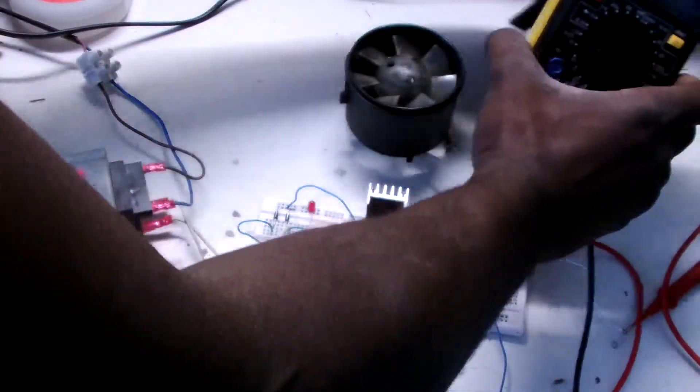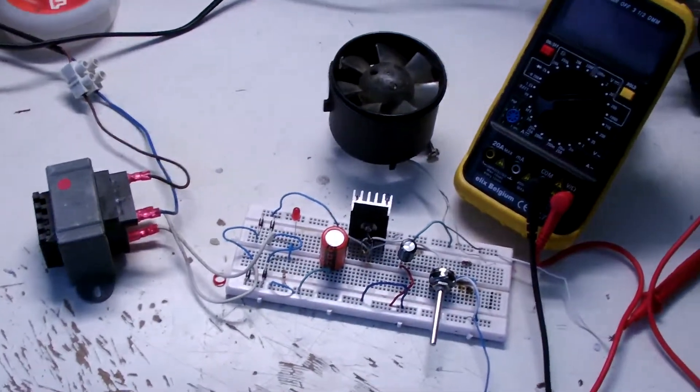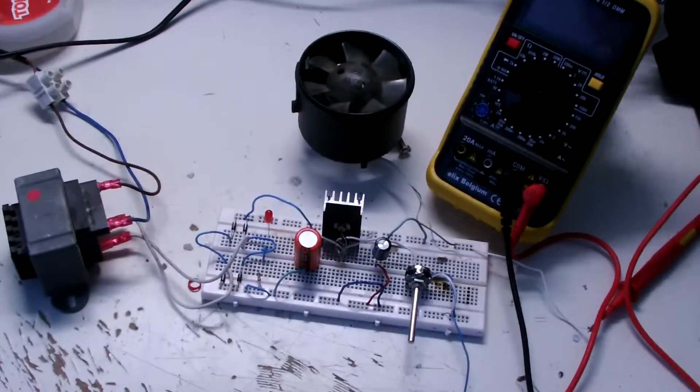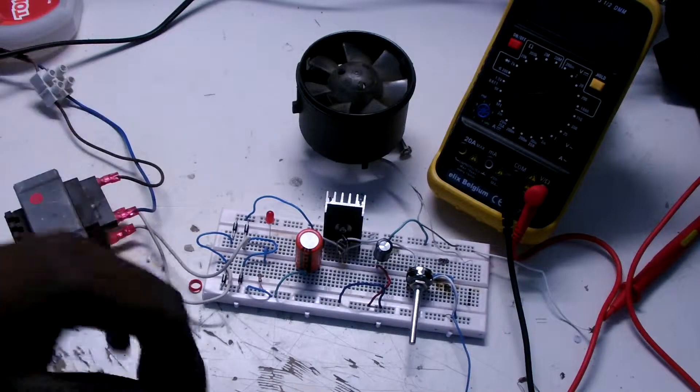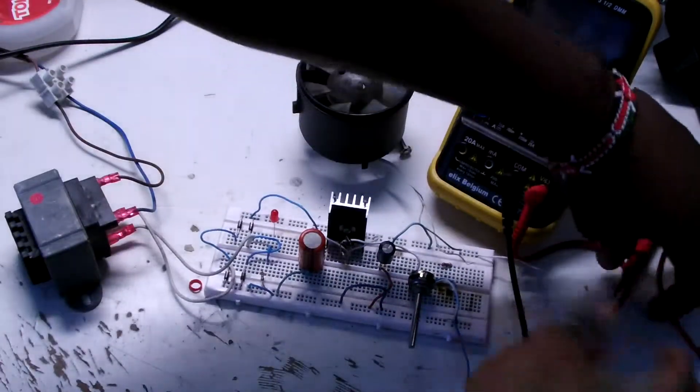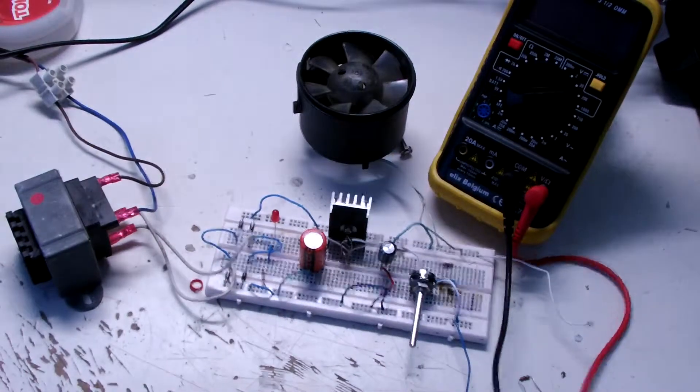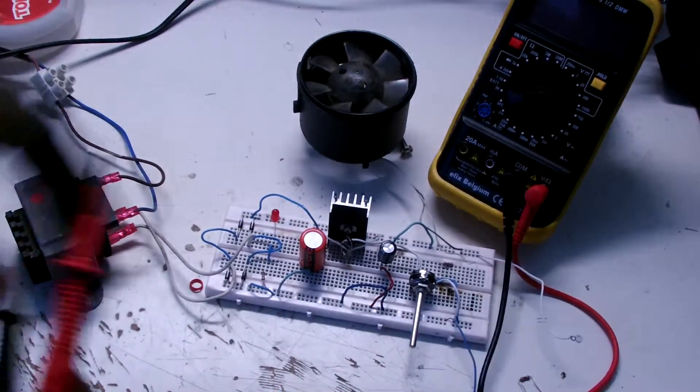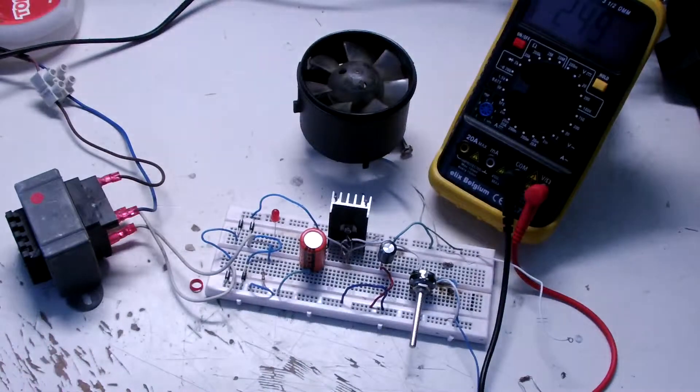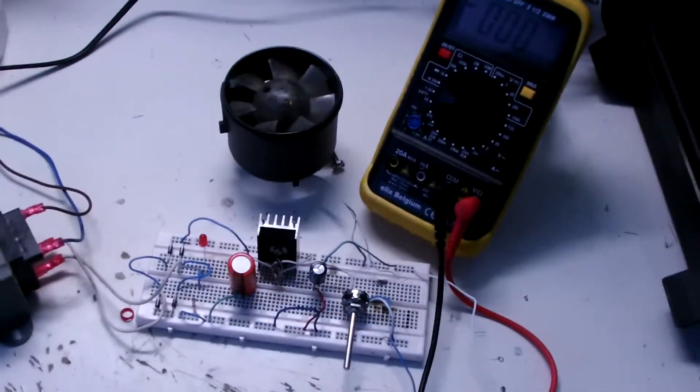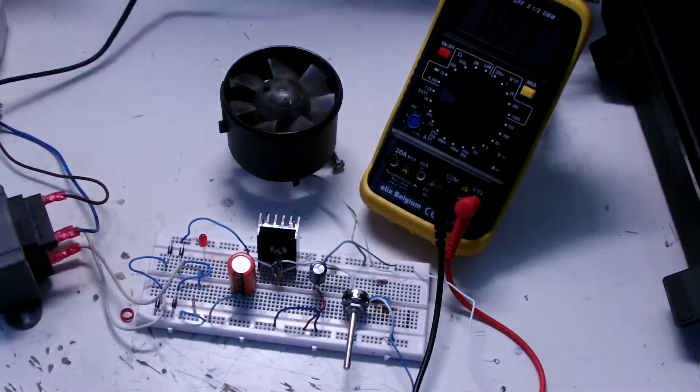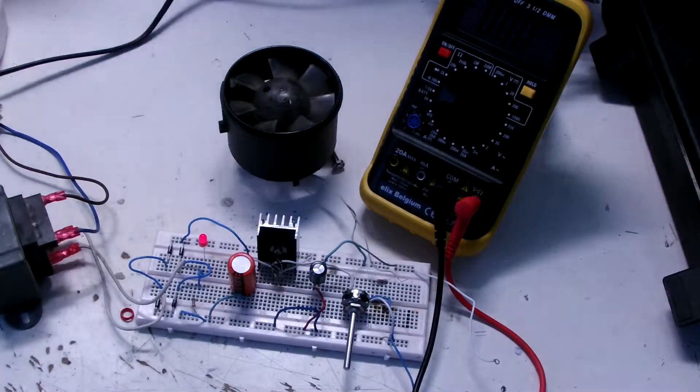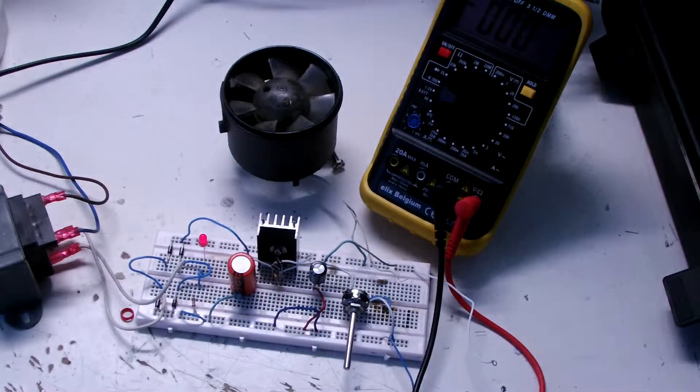First we're gonna measure the AC voltage from the transformer. I'm gonna put my meter on the right position. I'm gonna power the board. As you see, the LED is lighting, which means the power is on.